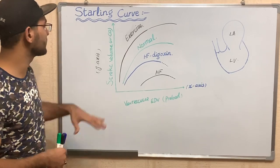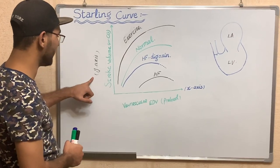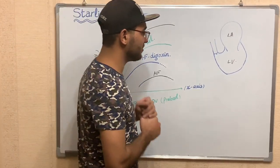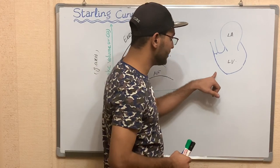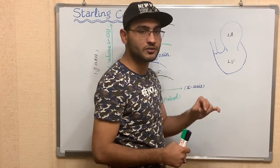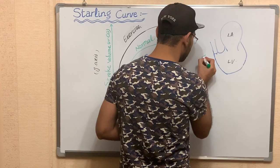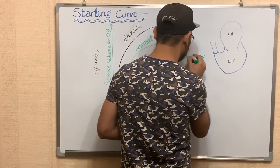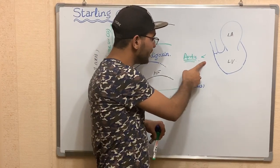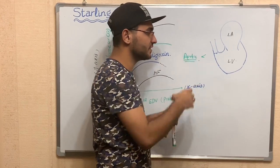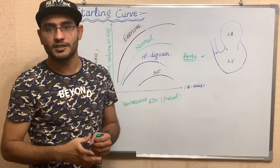Today we are going to discuss the Starling curve. The Starling curve is a graphical representation of the relationship between stroke volume and end-diastolic volume. The diastolic volume is the volume present in the ventricle before contraction, or before the opening of the semilunar valves. There are two semilunar valves: on the left side there is the aortic valve, and on the right side there is the pulmonary valve. The volume present in the ventricle before the opening of the aortic valve is known as the end-diastolic volume, also known as the preload.